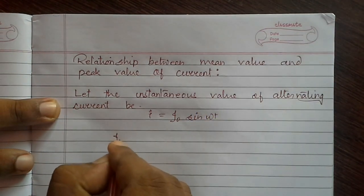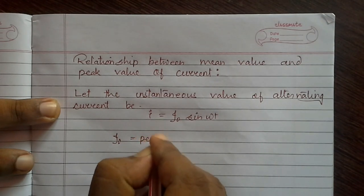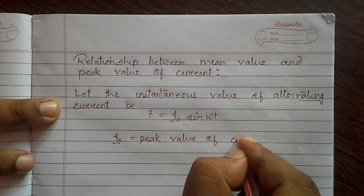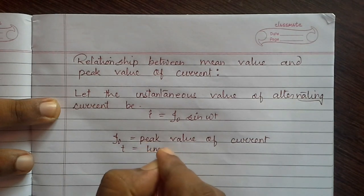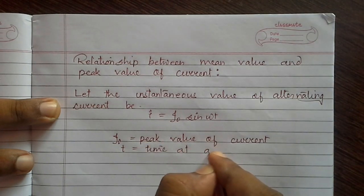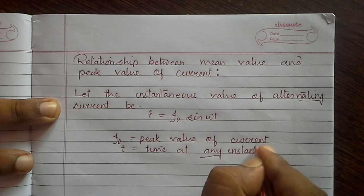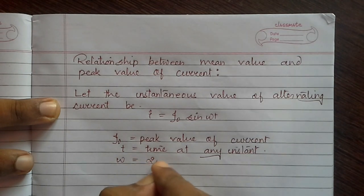Here i0 is the peak value of current, t is the time at any instant, and omega is the angular frequency which we can write as 2 pi by T.